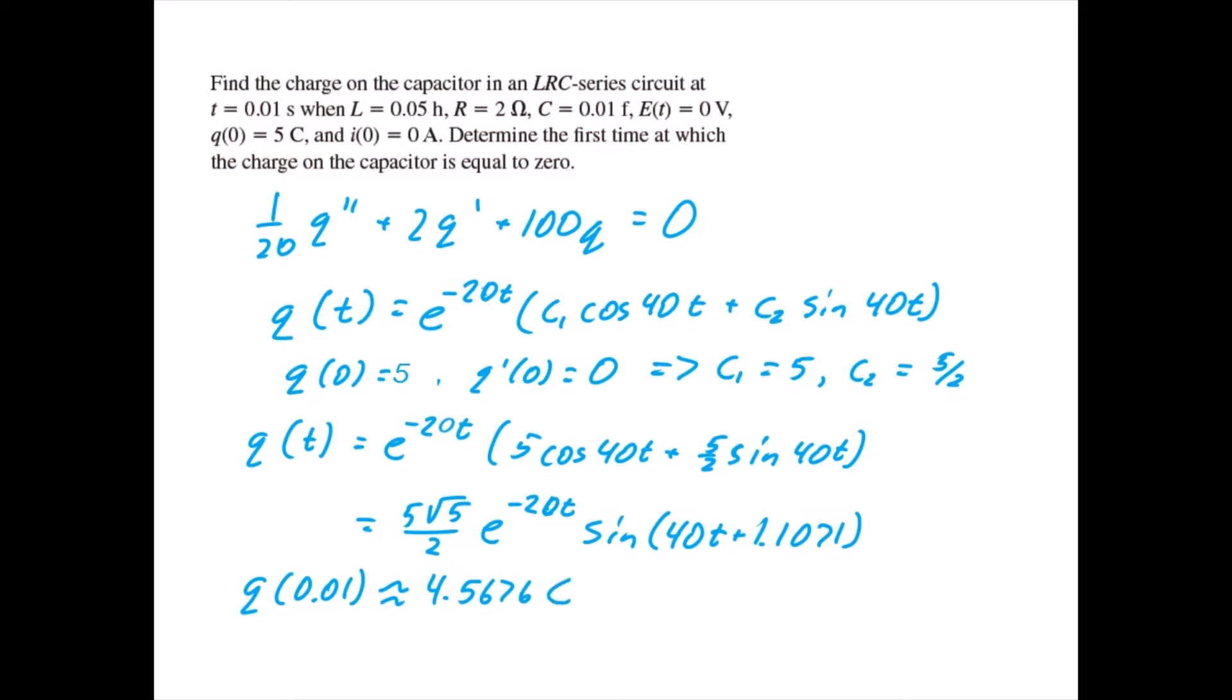The charge on the capacitor is going to be 0 for the first time when the value that is inside of the sine function, which is 40t plus 1.1071, is equal to pi. And if we solve this for t, then we find that the time that the capacitor is 0 for the first time is going to be approximately 0.0509 seconds.